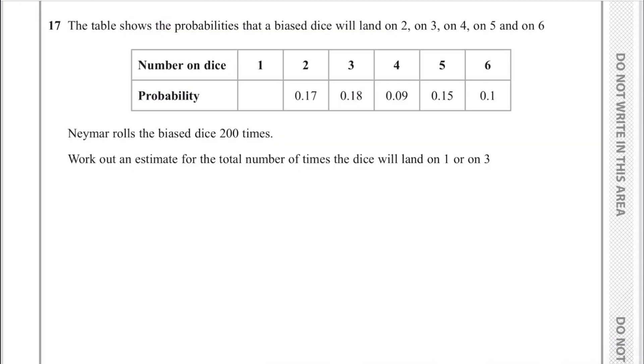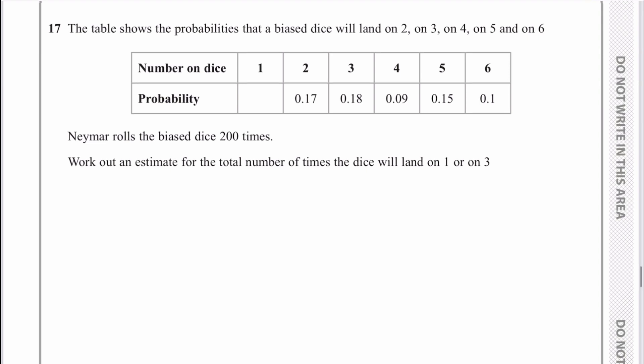Question 17: Neymar rolls the biased dice 200 times and it could land on 1, 2, 3, 4, 5, or 6. First I need to work out the estimate that it will land on number 1. All of these probabilities add up to 1, which is certainty. If I add all the given probabilities together, I get 0.69, so 1 - 0.69 = 0.31. Therefore the probability of landing on 1 is 0.31.